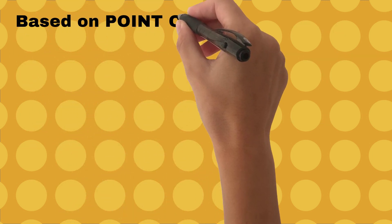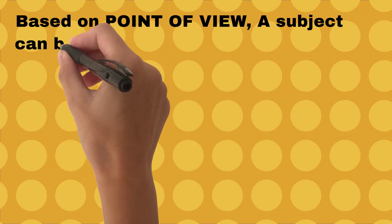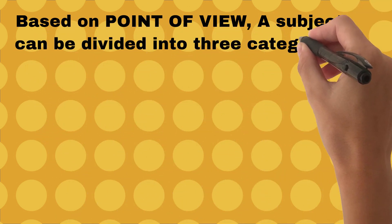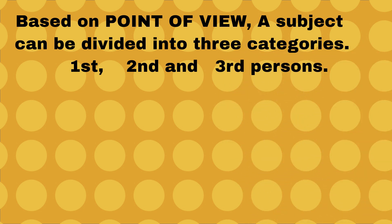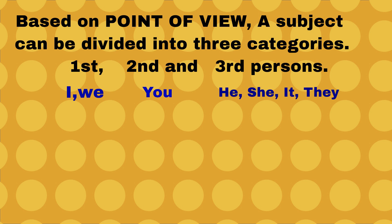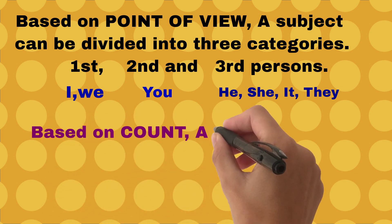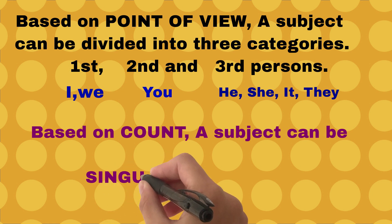Based on point of view, a subject can be divided into three categories: first, second, and third persons. First person includes I and we. Second person includes you. Third person includes he, she, it, and they. To learn in detail about point of view, open the link above. Based on count, a subject can be singular or plural.